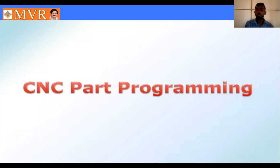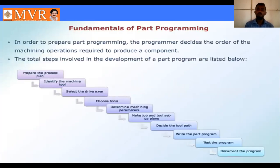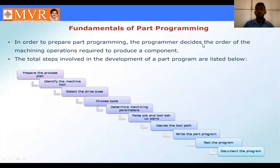The first topic is the fundamentals of path programming. In order to prepare a part program, the programmer decides the order of the machining operations required to produce a component. If we do not give the program in the correct order, we will not get the correct output and there may be defects on the component. That is why the programmer must decide the order of machining operations required to produce a component.